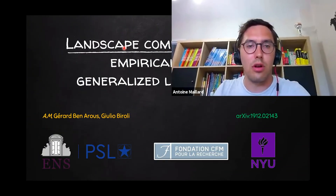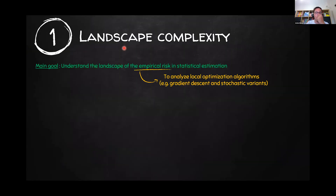I'm going to talk today about some recent work with Gérard Benarrus and Julio Viroli on the landscape complexity of the empirical risk for generalized linear models. Analyzing this landscape is interesting because it has a lot of consequences for the behavior of local optimization algorithms such as gradient descent or stochastic gradient descent.